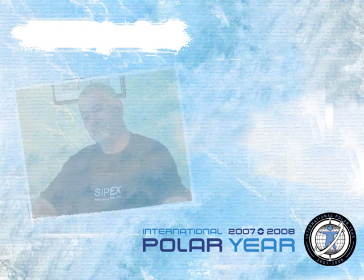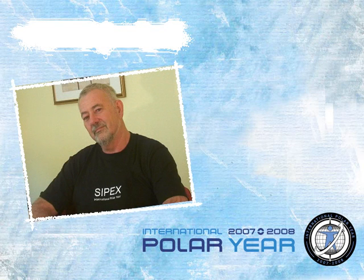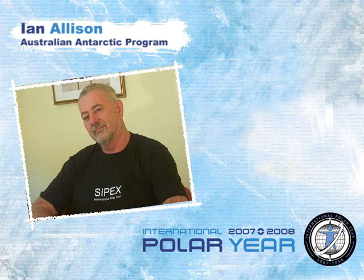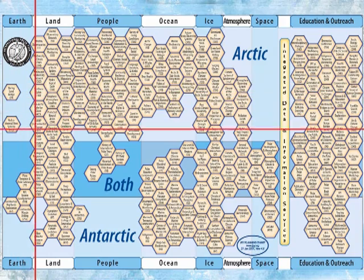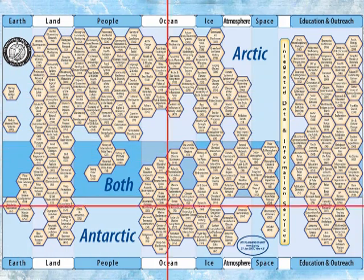My name's Ian Allison. I'm involved with the Australian Antarctic Program, and I've just had the opportunity to participate in one of the IPY projects. This is a project in the Antarctic dealing with Antarctic sea ice, and it fits into the IPY honeycomb diagram around about here.